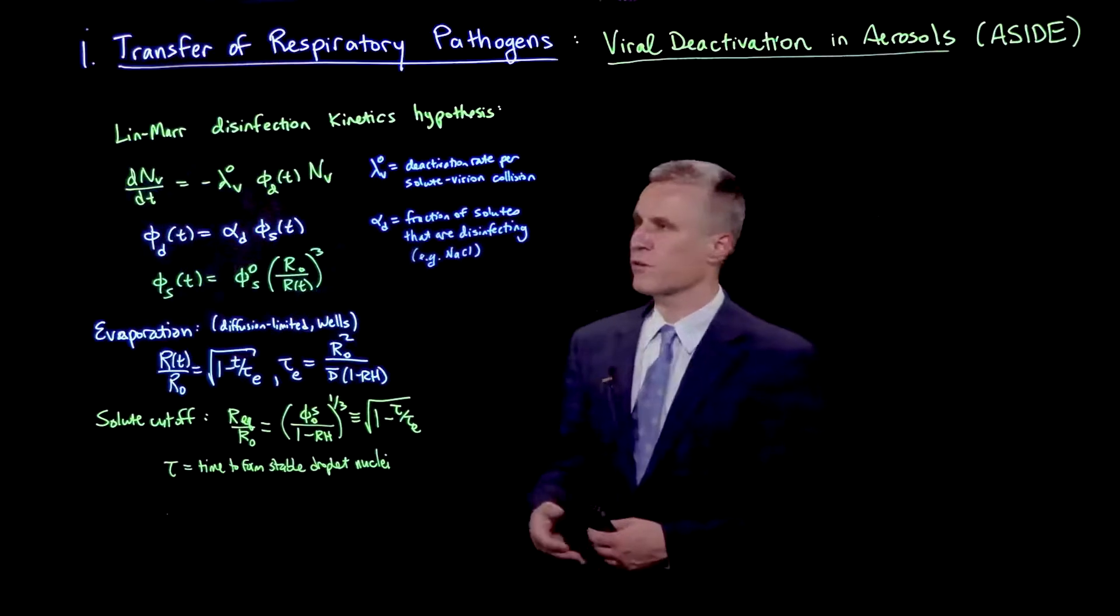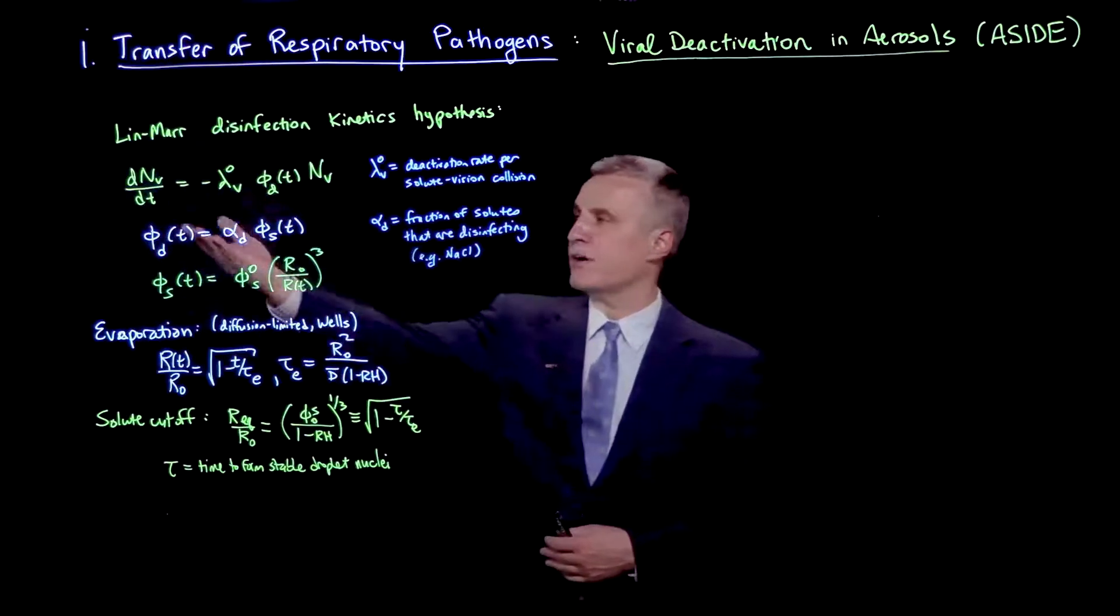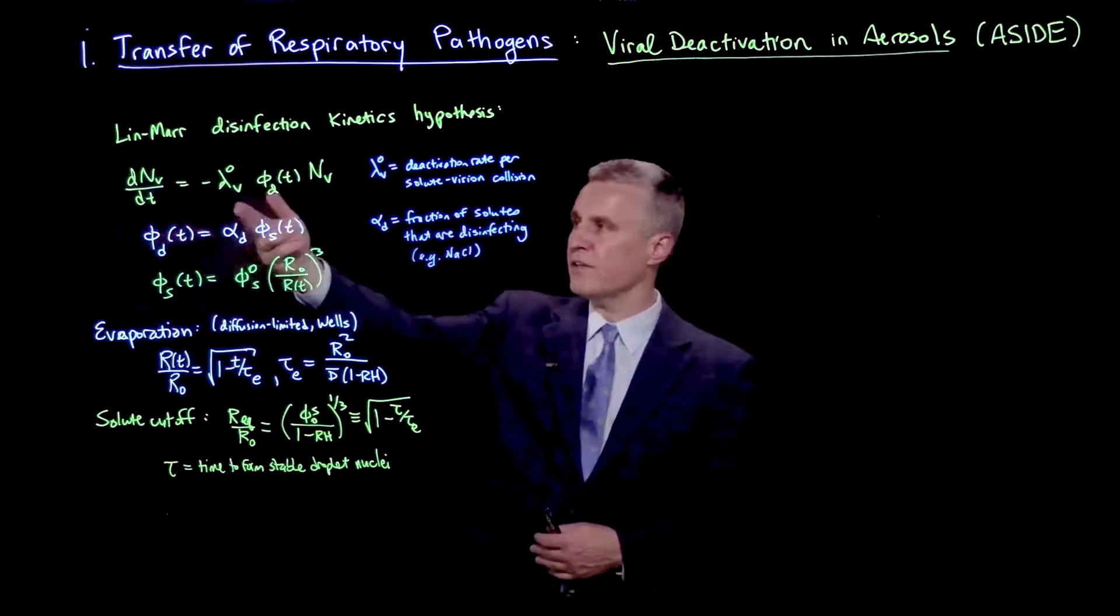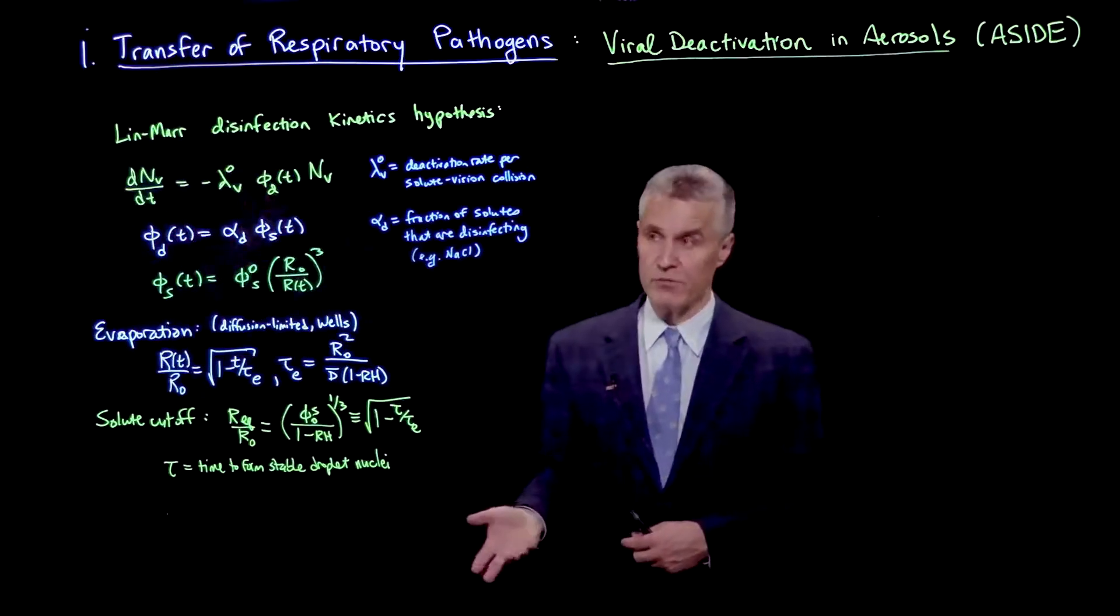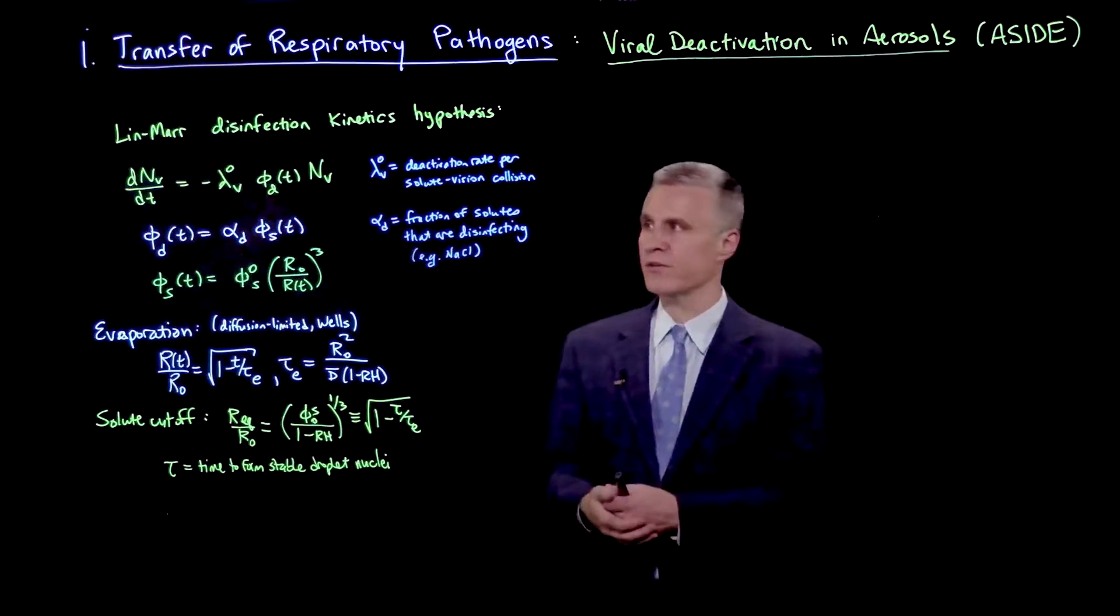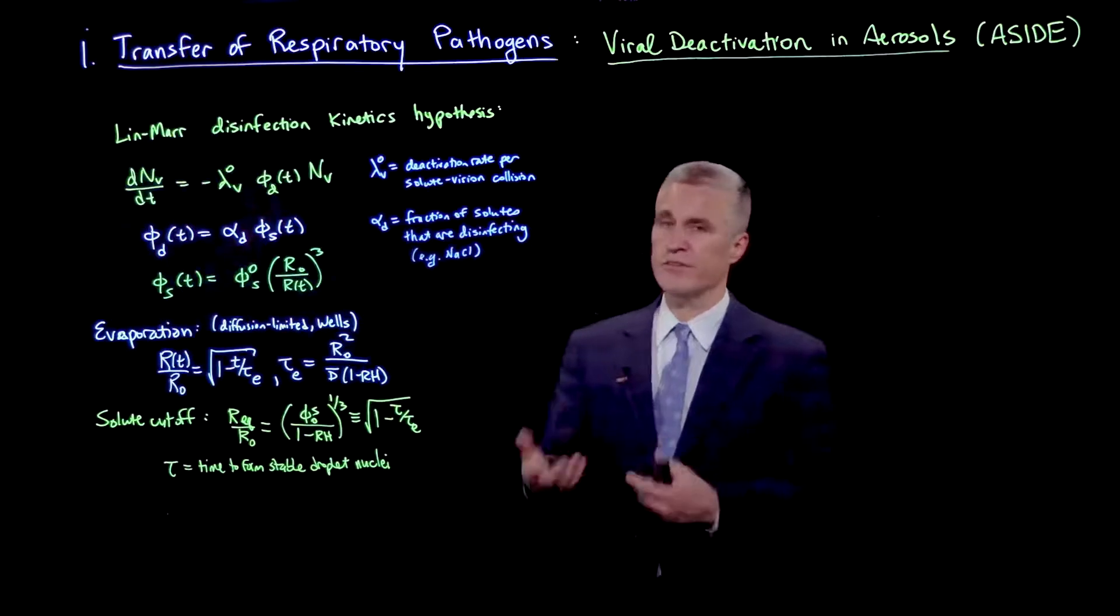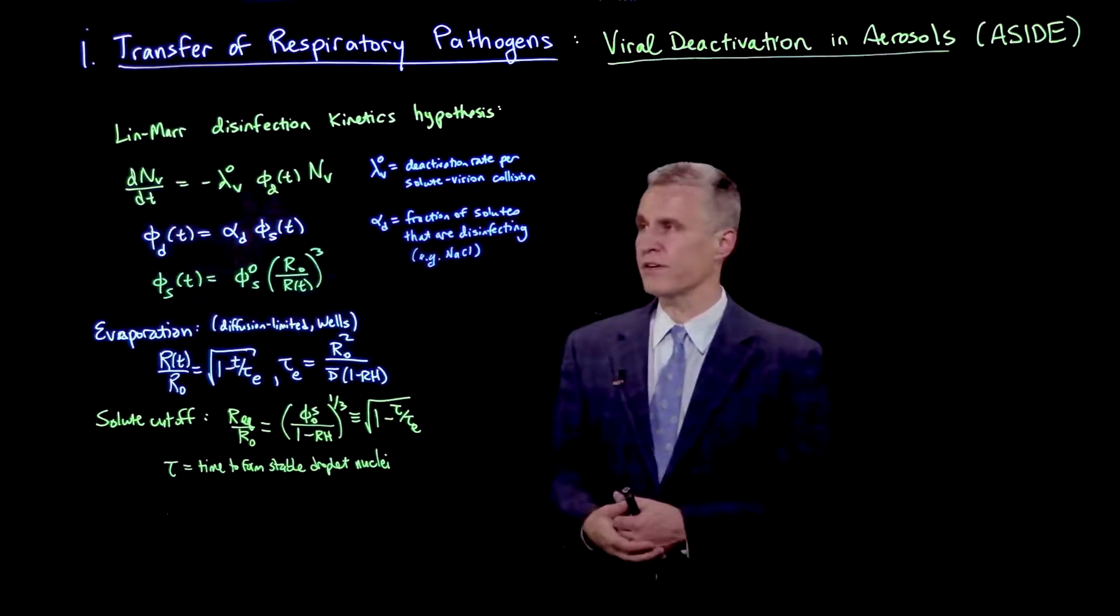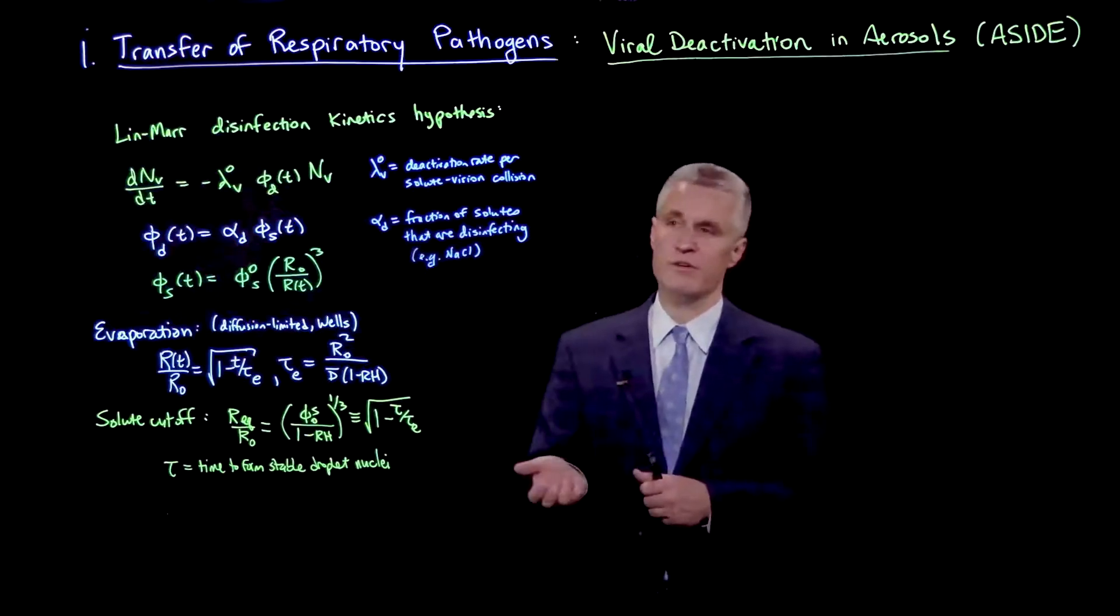To put in mathematical terms, if we have a certain number of viruses nv in a droplet, then we'll postulate that d nv dt is minus lambda v0, the deactivation rate per solute variant collision, times the volume fraction of disinfecting solutes phi d, which is time dependent having to do with the size of the droplet, times nv.